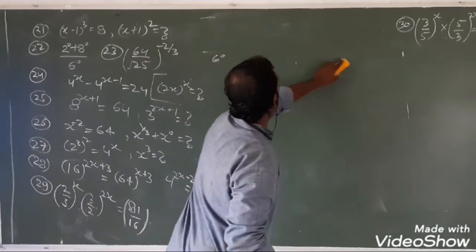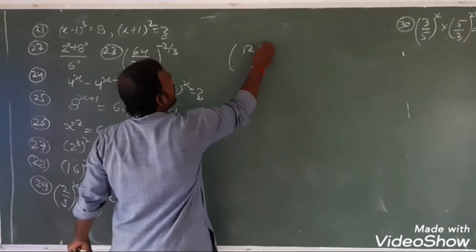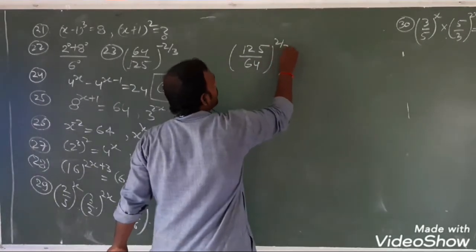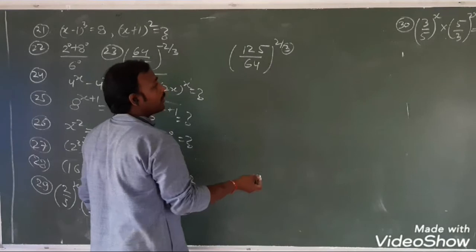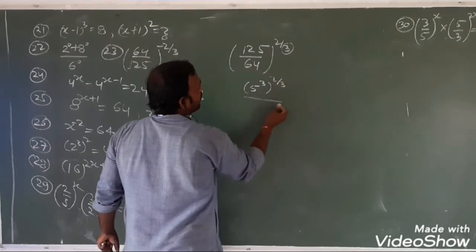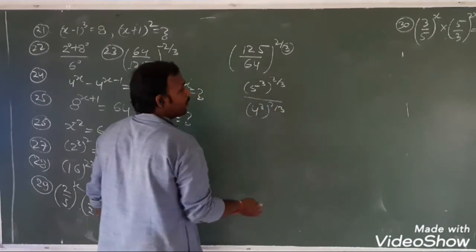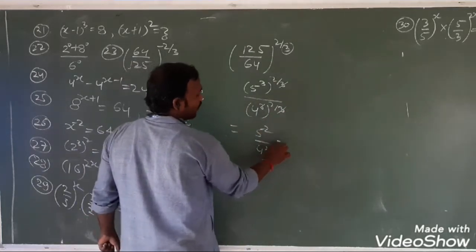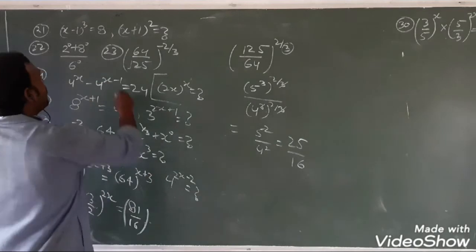Question number 23: here we have a power of minus. Take one hundred twenty-five over sixty-four, and its power is 2 by 3. With a minus power it becomes plus, so upon 3, taking all the factors — five to the power of 3, four to the power of 3 — simplifying: 4, 5, 25, 16. So you can see question 23 is also complete.